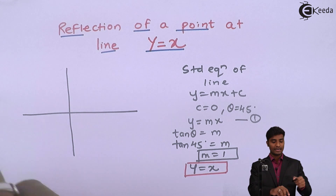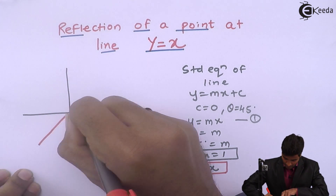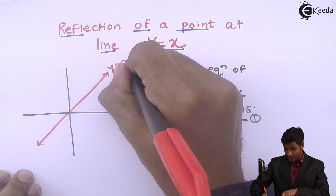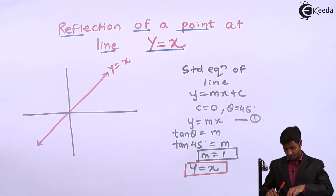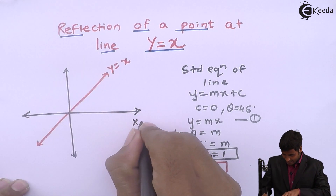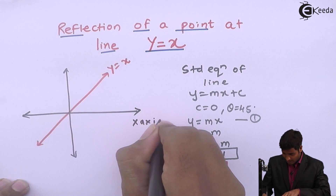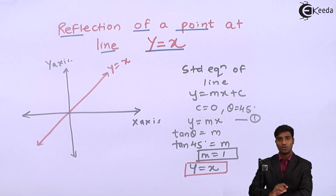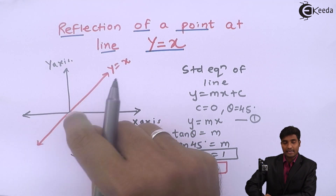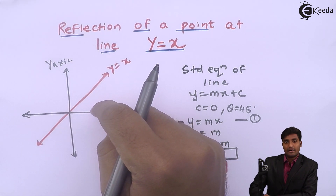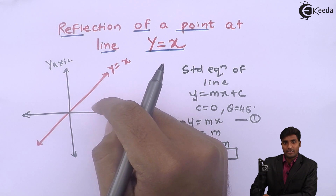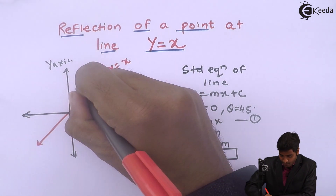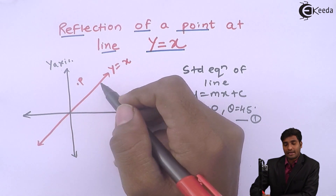I will draw that line. This is that line y is equal to x. This is the x-axis and this is the y-axis. This is that line which is passing through the origin, that is y is equal to x. So I will reflect this point P about this line.